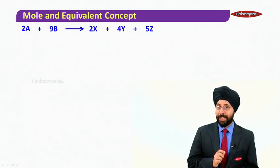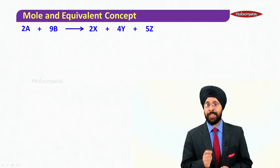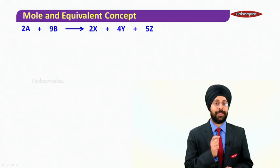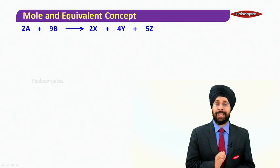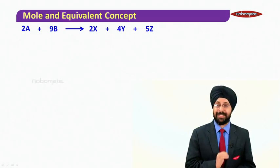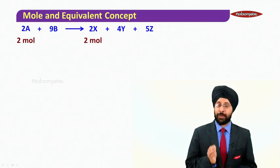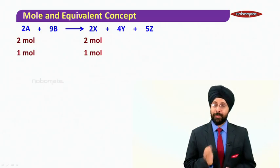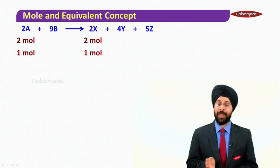We write down the stoichiometry of the reaction: 2A plus 9B gives you 2X plus 4Y plus 5Z. The interesting part is 2A and 2X. So we write down 2 mol A is going to produce 2 mol X. So 1 mol A is going to produce 1 mol X.